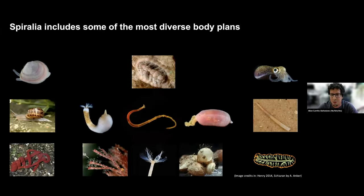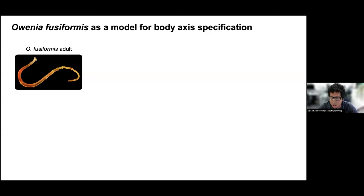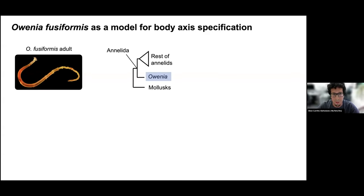Spiralians have the most diverse body plans when we look at both larvae and adults. This includes some things that are very delicious, like clams and mussels, but also things that can make colonies, solitary predators, and in our case, we study the segmented worms that are annelids. In particular, we use Owenia fusiformis, and one of the main reasons is that it's part of the group that is sister to the rest of the annelids. That helps us try to infer what would be the ancestral developmental mechanisms for annelids, and then we compare to other spiralians.